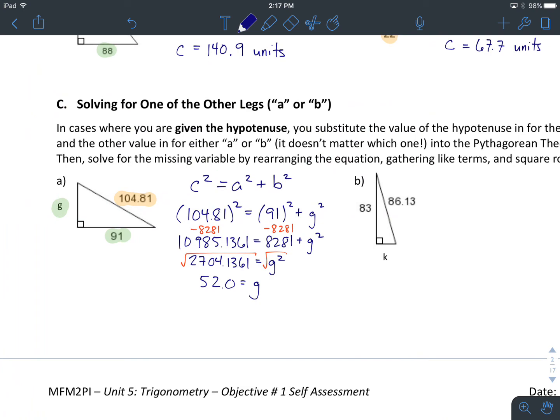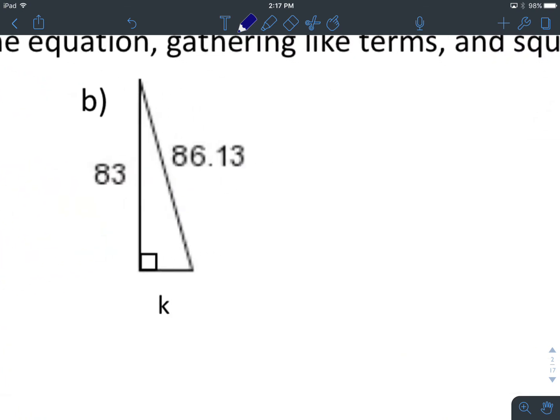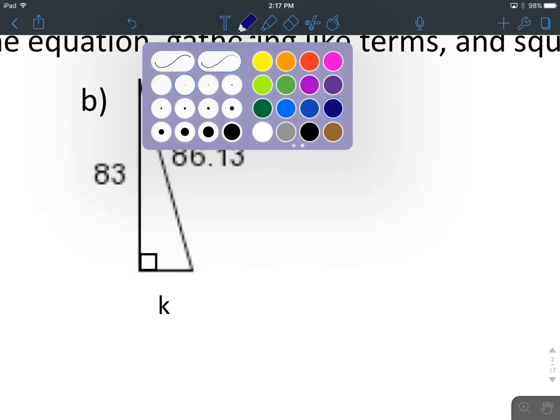So what I would like you to do now is hit pause in the video, and I would like you to try on your own to find the side K in this right angle triangle in example B. So hit pause, come on back when you are done, and we will see how you did. Okay, let's start with our Pythagorean theorem.